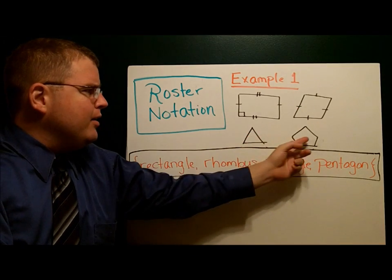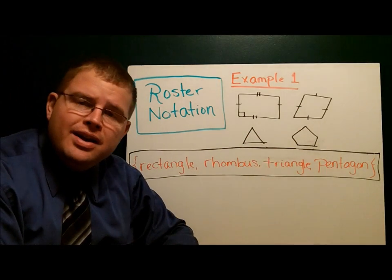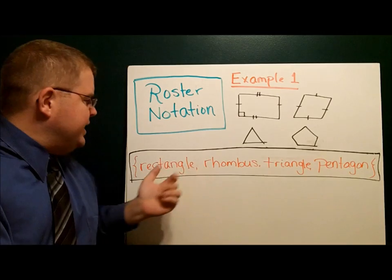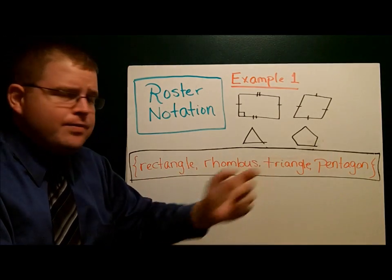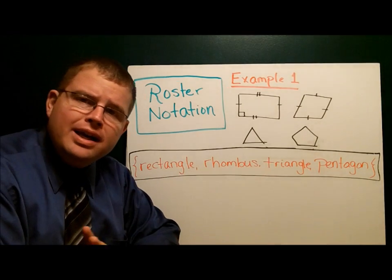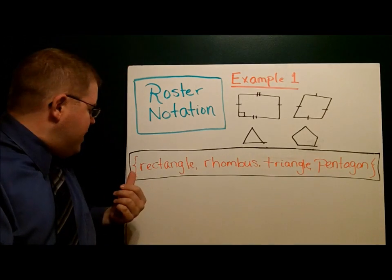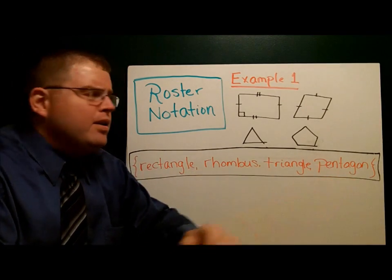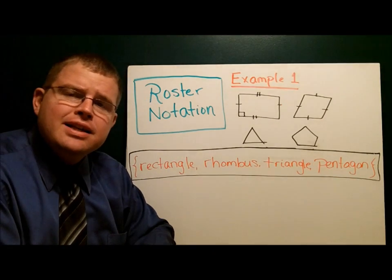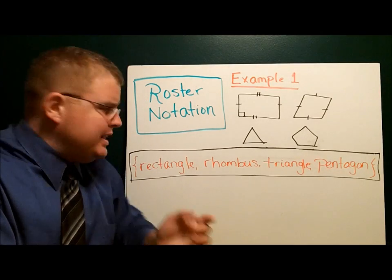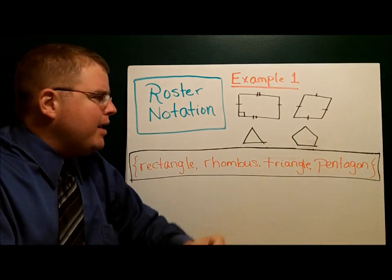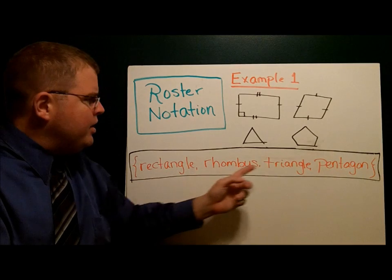Rectangle, rhombus, triangle, pentagon. That set written in roster notation is simply the names of each of the four shapes. It's important to notice that at the front and at the back we have squiggly braces. That shows that's the collection. These things all go together somehow, and we separate them with a comma.